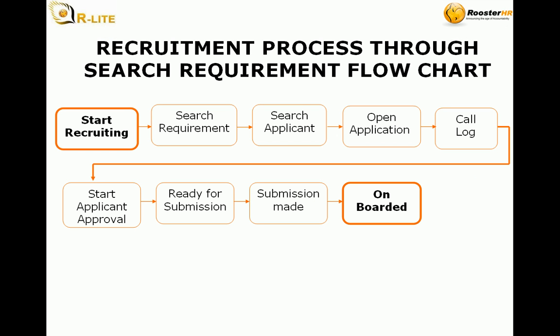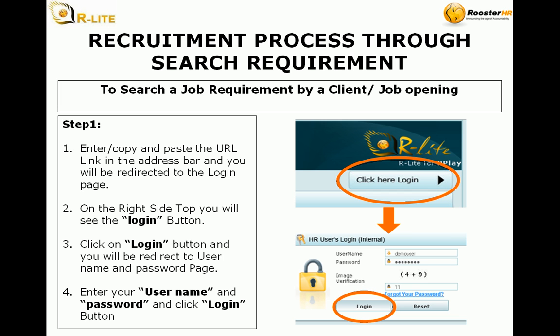Recruitment process to search requirement flowchart: start recruiting, search requirement, search applicant, open application, call log, start applicant approval, ready for submission, submission made, onboarded. The recruitment process research requirement helps to search a job requirement by a client or job opening. Step 1: Enter or copy and paste the URL link in the address bar and you will be redirected to the login page.